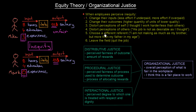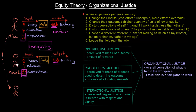Fifth, choose a different referent — 'I'm not making as much as my brother but more than my father at my age.' Maybe Mike and Mark are brothers; Mike found he is making less than Mark, so he will choose a third person to compare himself with and forget about Mark. Finally, sixth: leave the field — quit the job. If we feel we are being underpaid, we would leave the job.